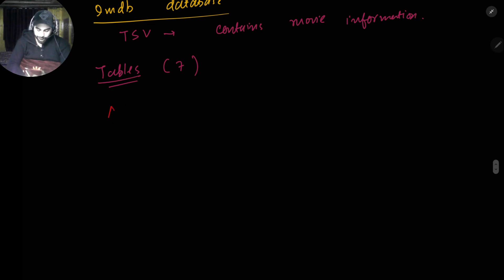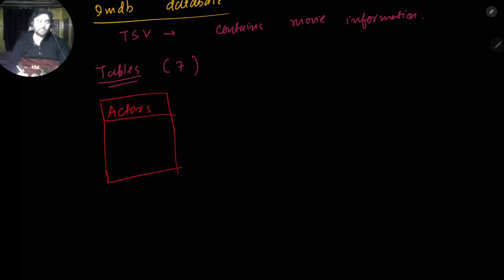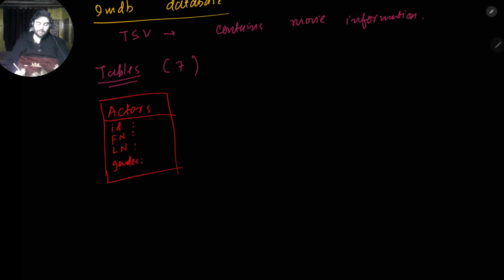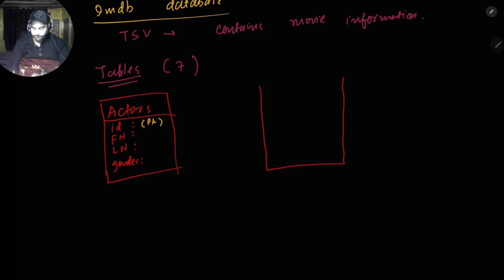The first table we'll work with is the actors table. The actors table will have these attributes: the first attribute will be id, then first name, then last name, and then gender — four attributes in total. The id will be the primary key. Then we'll have a second table called directors.